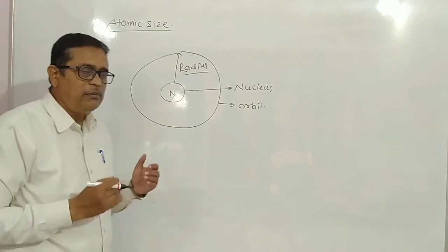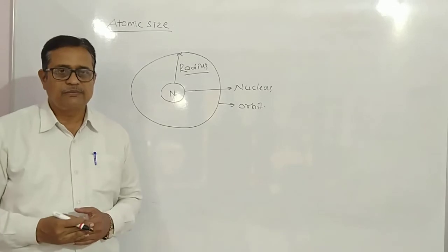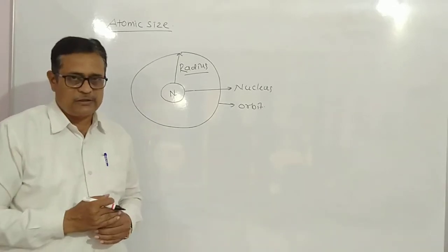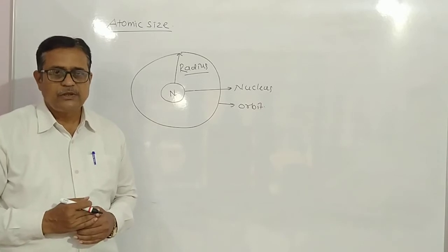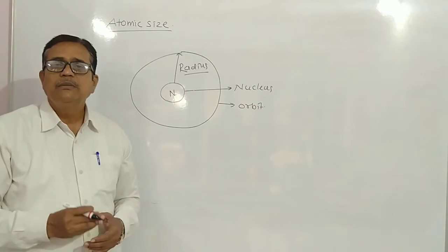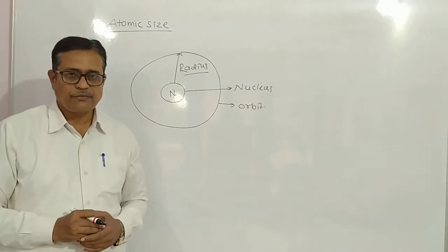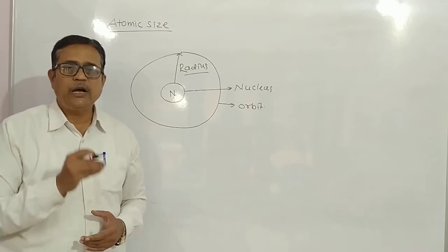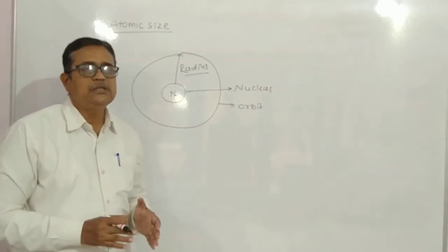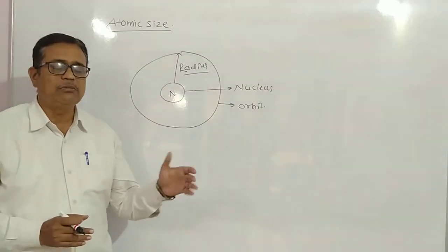In the modern periodic table, elements are arranged in increasing order of their atomic numbers. As the atomic number increases, the number of electrons increases, and hence the number of orbits also increases. A new orbit starts from each new period — the first period has one orbit, the second period has two orbits, and the third period has three orbits.